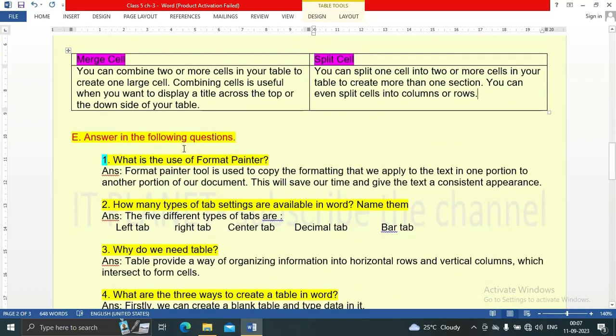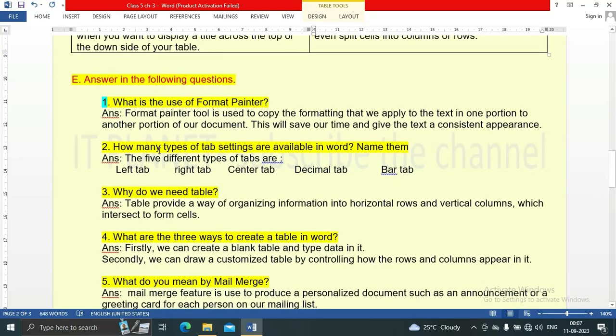Answer the following questions. What is the use of format painter? Format painter tool is used to copy the formatting that we apply to the text in one portion to another portion of our document. This will save time and give the text a consistent appearance. How many types of tab settings are available in Word? Five different types of tabs are: left tab, right tab, center tab, decimal tab, and bar tab.